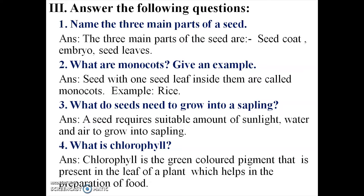What is chlorophyll? Chlorophyll is the green-colored pigment that is present in the leaf of a plant which helps in the preparation of food.